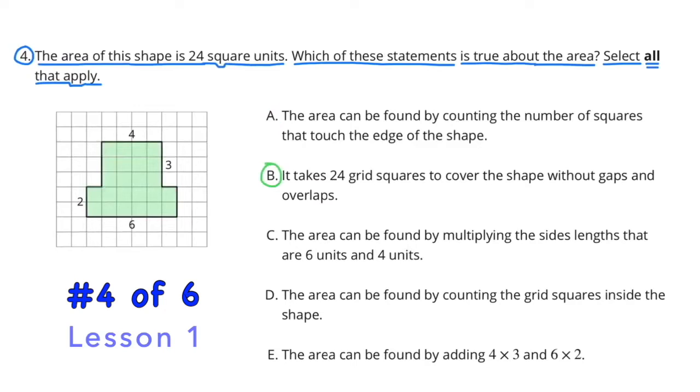B does apply. It takes 24 grid squares to cover the shape without gaps and overlaps. That is the area.